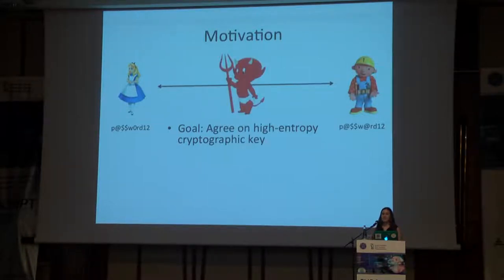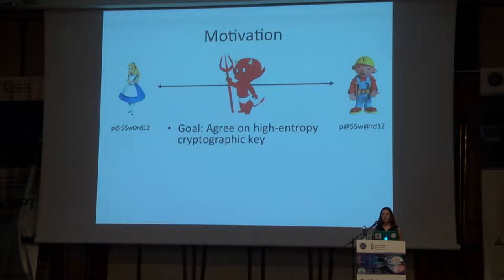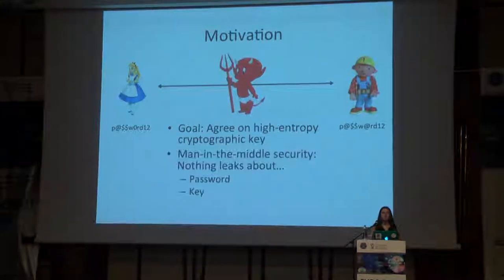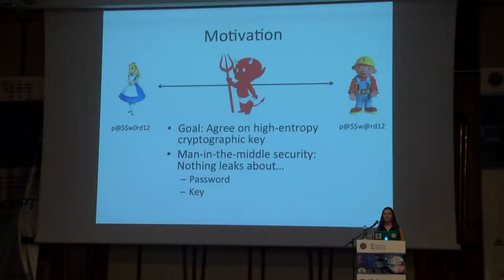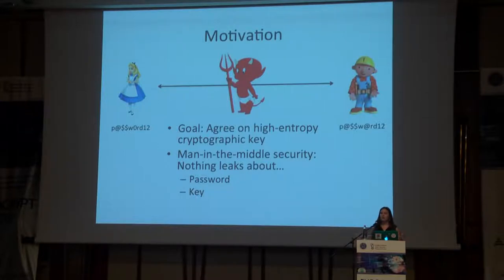If they had an active man in the middle, that man in the middle could prevent them from doing this — at the very least, they would just drop all of their messages. But Alice and Bob want to make sure that no matter what this active man in the middle does, he shouldn't learn anything at all about their passwords, in case they want to reuse the password later, or the key they agree on if they manage to agree on a key.